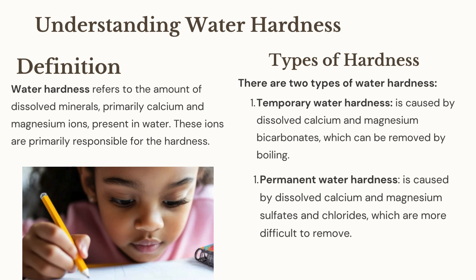There are two types of water hardness: one, temporary water hardness, and two, permanent water hardness. Temporary water hardness is caused by dissolved calcium and magnesium bicarbonates, which can be removed by boiling. Permanent water hardness is caused by dissolved calcium and magnesium sulfates and chlorides, which are more difficult to remove.